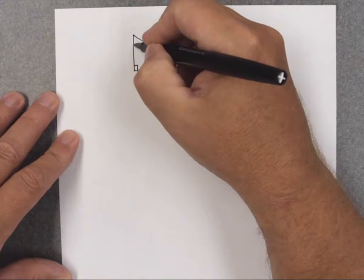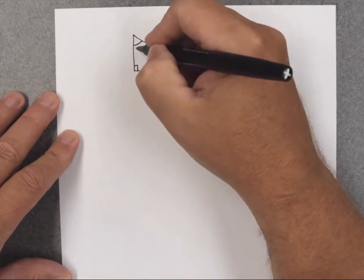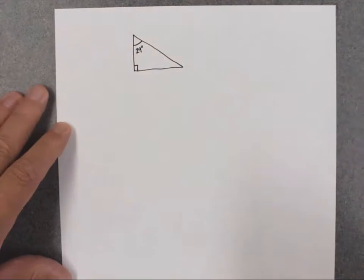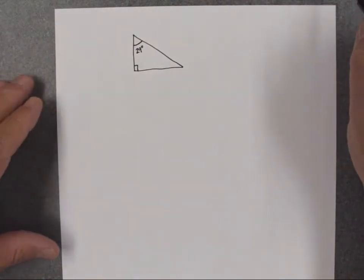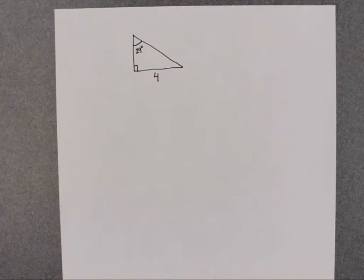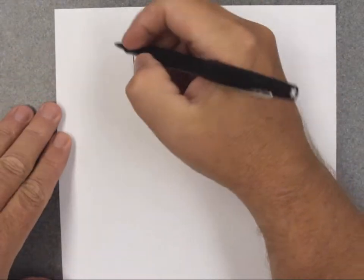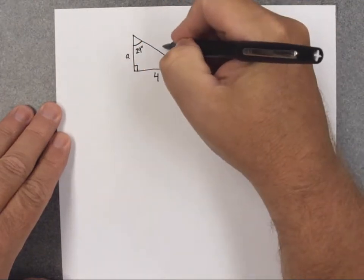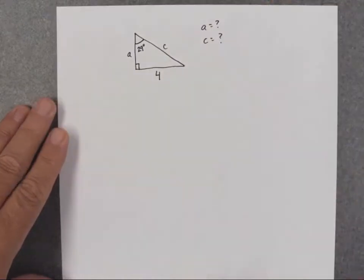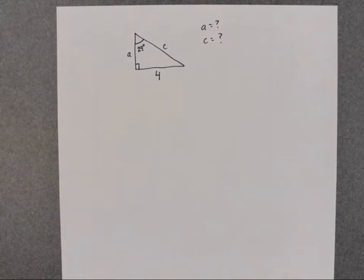I'm going to define this angle up here and call it a 29 degree angle. I'm going to decide the length of this bottom side of the right triangle is 4. We'll call the length of this side A and we'll call this side C. Basically, I want to determine the lengths of the two sides of the triangle that are not defined. Now we can use trig functions to figure out the sides of this triangle.